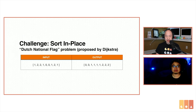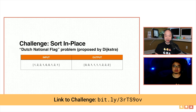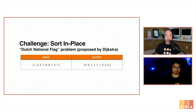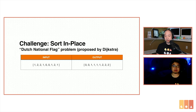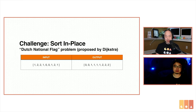So just a quick recap. The problem this week was a challenge to sort in place. You have an input array — it could be any number of items — but it contains the digits 0, 1, and 2 in some order. And you're supposed to sort it so the output looks like what you see on the right side. Simple enough.